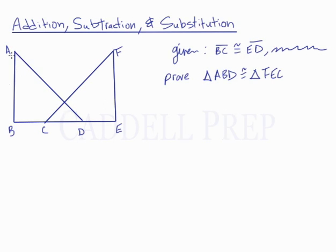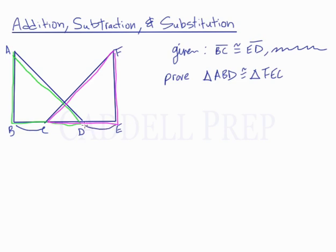Look at the triangles. We have triangle ABD and triangle FEC. We know that BC is congruent to ED — this line segment BC is congruent to this line segment ED. But that doesn't really give us enough information to prove that these triangles are congruent, because BC and ED aren't actually sides of the triangles. BC is part of a side. BD is a side of the green triangle and EC is a side of the pink triangle, but we only have a portion of those sides. So how can we use this to prove that the whole side is congruent to the other whole side?